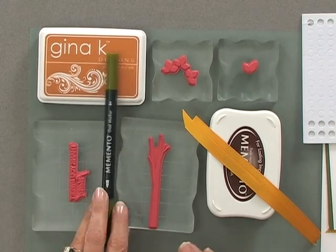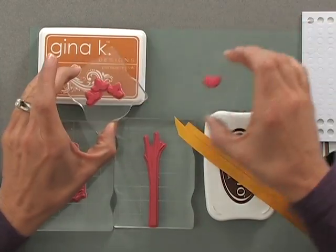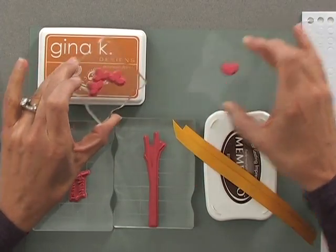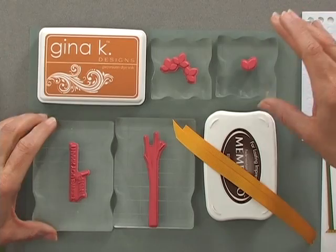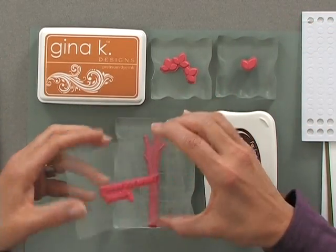First, you're going to need the images. I have the branch image and then the two little images that contain the leaves that are stamped onto the branch. I also have the greeting that says thank you, sweet friend.